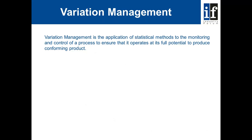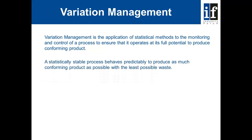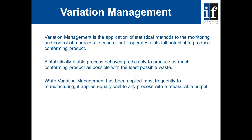Variation management is the application of statistical methods to the monitoring and control of a process to ensure that it operates at its full potential to produce conforming product. A statistically stable process behaves predictably to produce as much conforming product as possible with the least possible waste. While variation management has been applied most frequently to manufacturing, it applies equally well to any process with a measurable output.